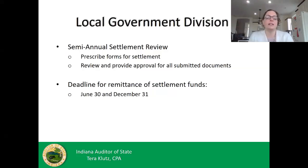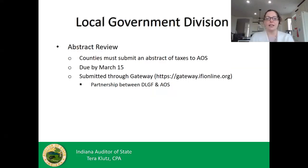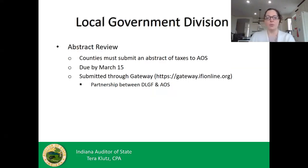The settlement is essentially taking property taxes collected by the treasurer and distributing them out to all varying units within the county based on the tax rate — all based on the abstract. The abstract review is the next major process, coming in the spring. For new county auditors, it is due by March 15th and submitted through Gateway. The abstract will be reviewed by DLGF this coming year, but we will be working very closely with them.